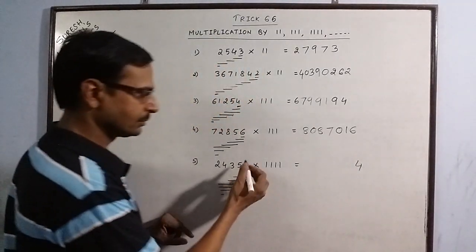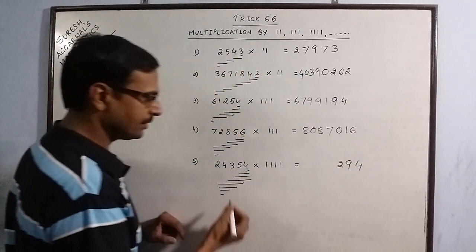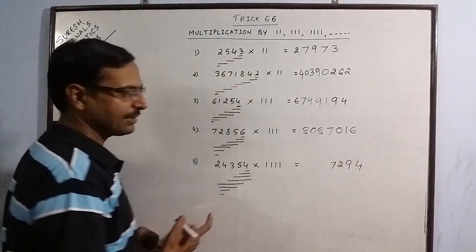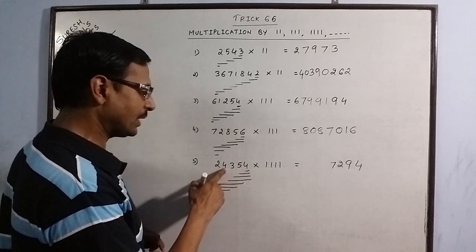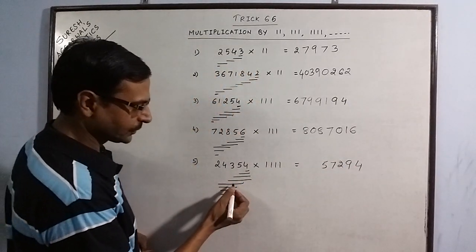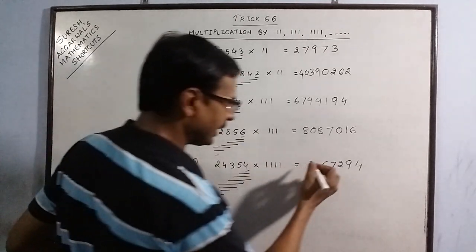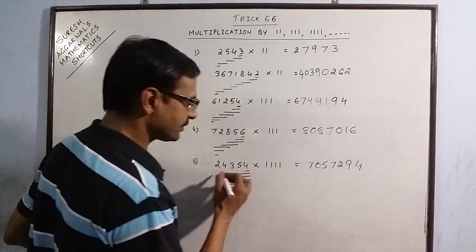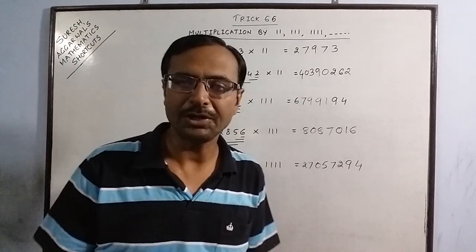So now let us write the product. 4, 5 plus 4, 9, 9 plus 3, 12, 2, 1 carry. 12 plus 4, 16 plus 1 carry 17. 7, again 1 carry. Now start from 5. 5 plus 3, 8 plus 4, 12 plus 2, 14 plus 1 carry 15. Again 1 carry. Now we have 3 digits. 4 plus 3, 7 plus 2, 9 plus 1 carry 10. 0 again 1 carry. 4 plus 2, 6 plus 1, 7. And a single digit 2. So you have the product. 2, 7, 0, 5, 7, 2, 9.